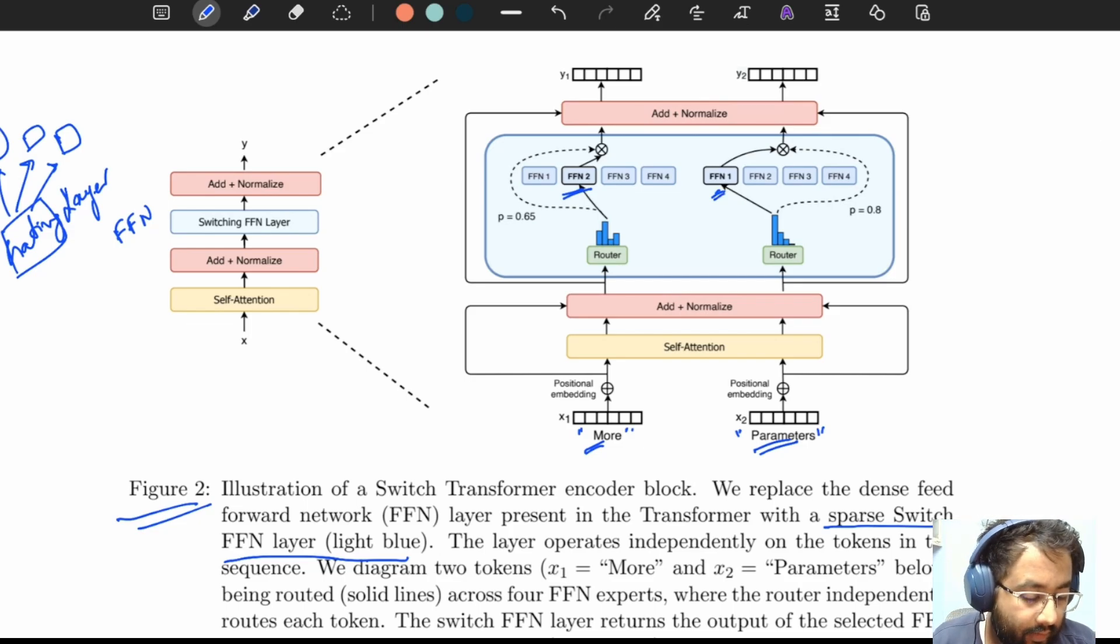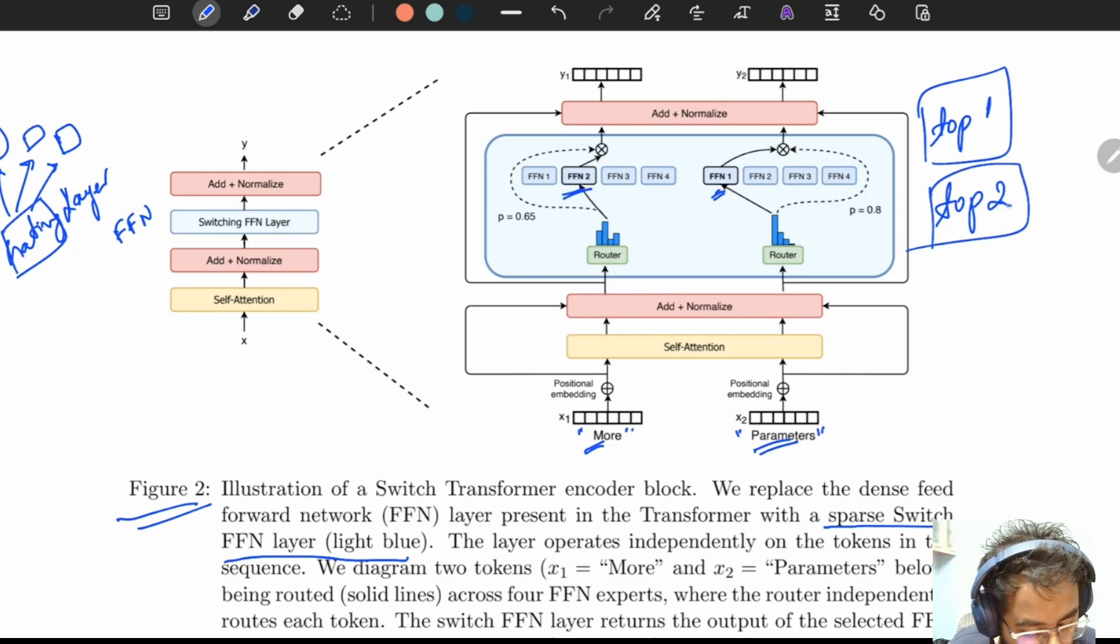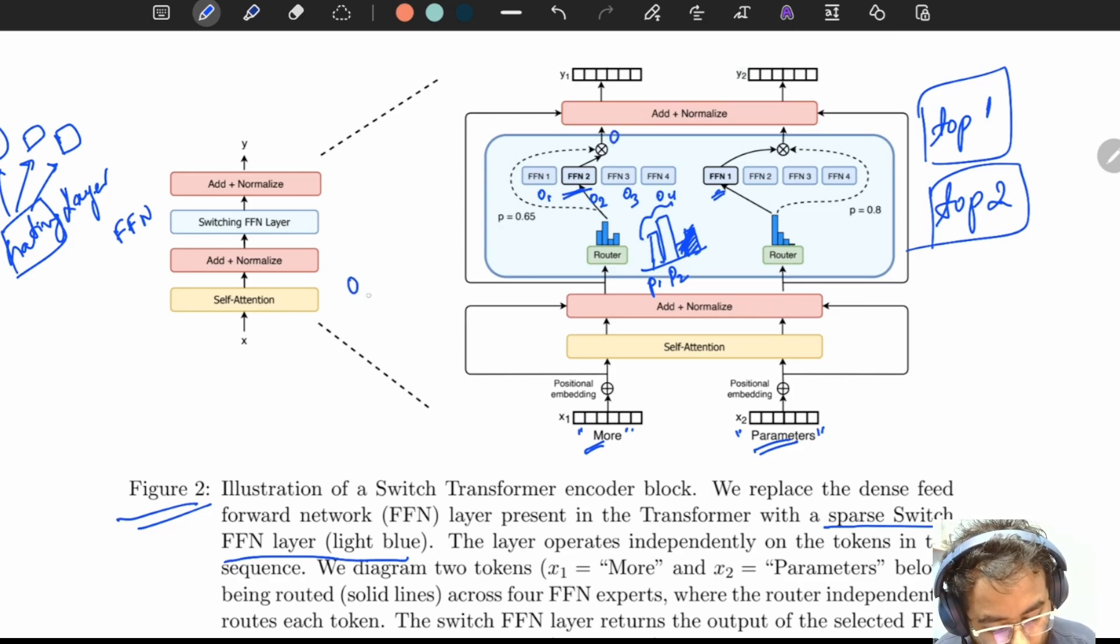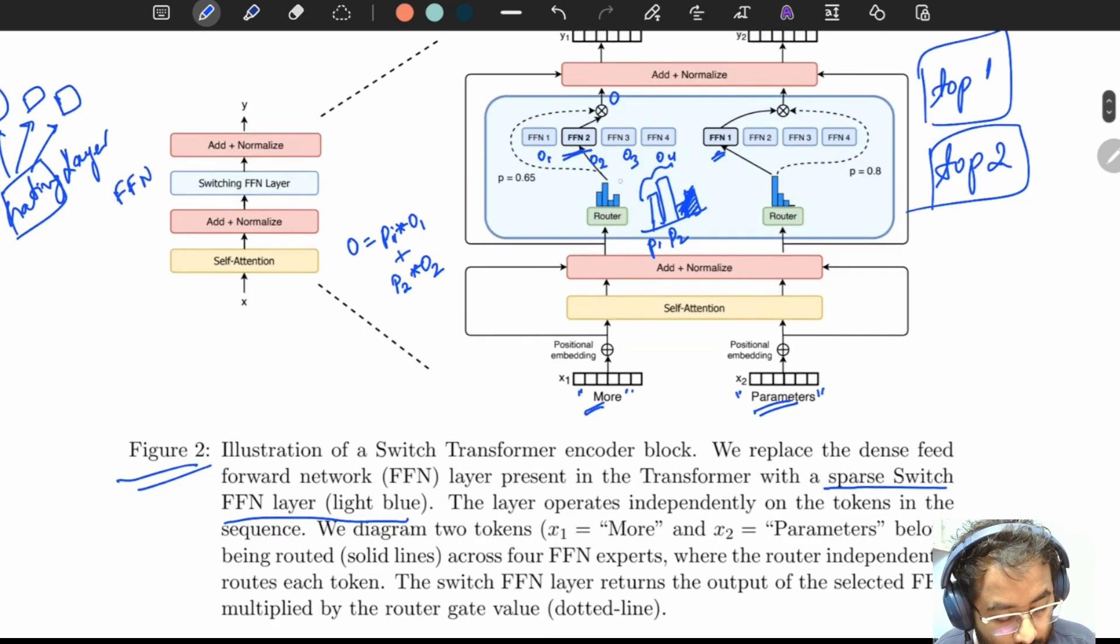This is what could happen if we have to select top one experts. Now suppose if we want to select top two experts, then what would happen is for the given string 'more' the router is outputting these kind of probabilities. If we want to select only top two we would be removing these two, then we would apply softmax on these two. Suppose the output would be p1, p2 and the output of the experts are o1, o2, o3, and o4, and the final output is o. In this case o would be p1 multiplied by o1 plus p2 multiplied by o2.